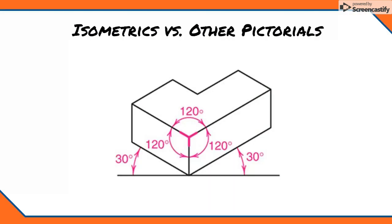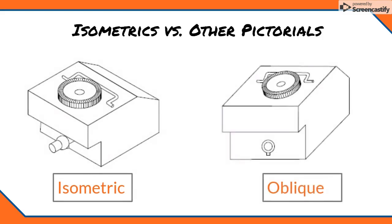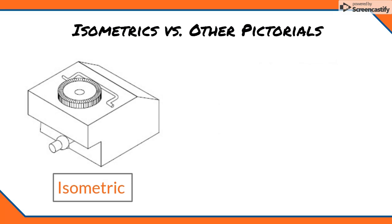Isometrics have some nice advantages. Unlike some other pictorials, the width and depth lines of the object are drawn at 30 degree angles from horizontal. This gives us a better 3D illusion than we see in an oblique pictorial, and because width lines and depth lines are all drawn at exactly 30 degree angles, the surfaces of the part are not distorted very much, and we get a 3D image that is more proportional than a perspective drawing.